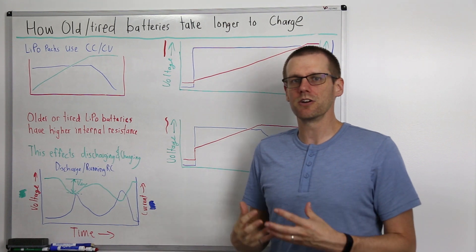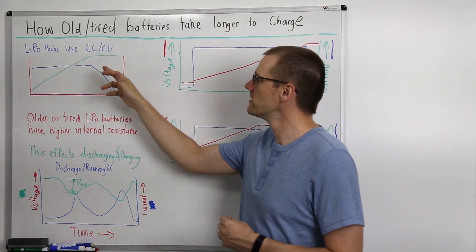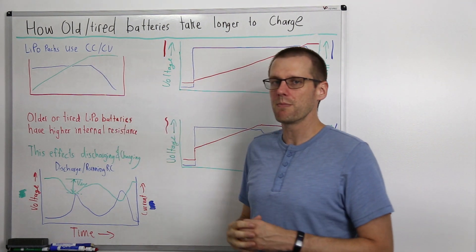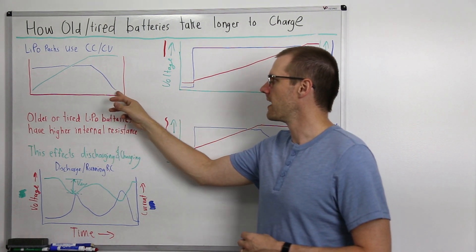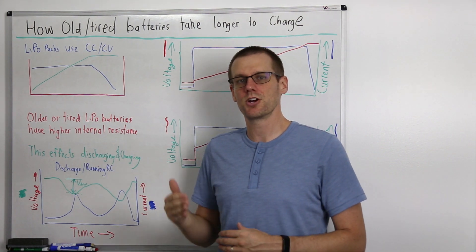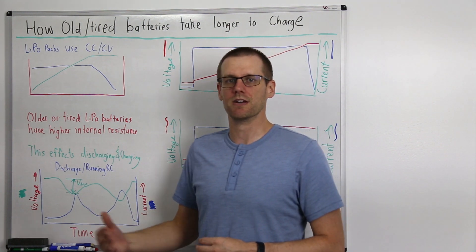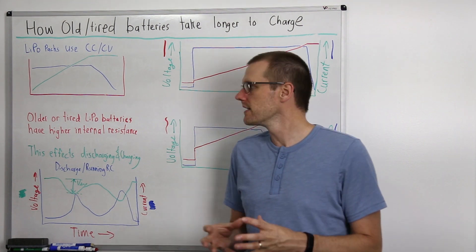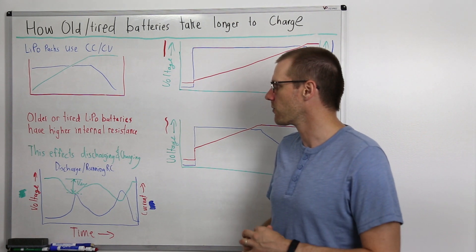The charger recognizes this and starts to rip the current down. We enter the constant voltage phase right here at the top where we see that green line, and our current is ramping down to zero. Once it hits about that zero current mark, the charger terminates the charge. That means our battery is at 100% state of charge. That in a nutshell is how the constant current slash constant voltage method works.